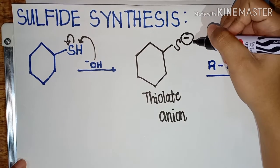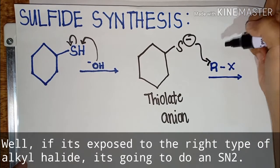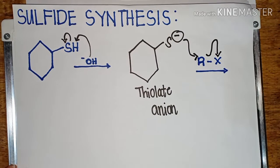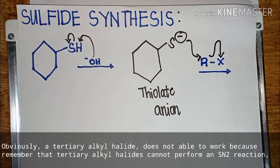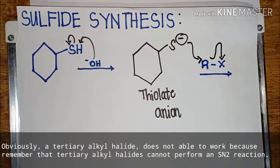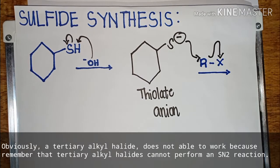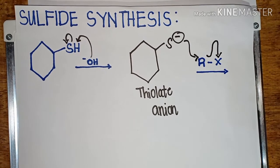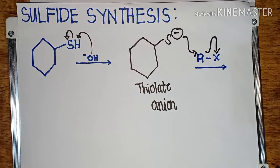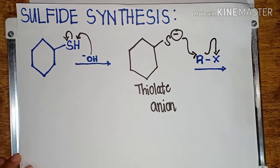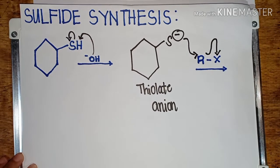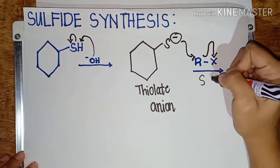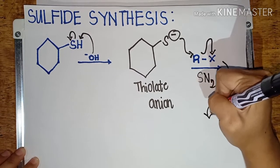What can the thiolate do when exposed to an alkyl halide? If it's exposed to the right type of alkyl halide, it's going to do an SN2. What does 'right type' mean? A tertiary alkyl halide will not work because tertiary alkyl halides cannot perform an SN2 reaction. But if it's primary or secondary, it's going to work. So this would have to be a primary or secondary alkyl halide. The thiolate attacks via the SN2 reaction, and the product is simply a sulfur with whatever that R group was.